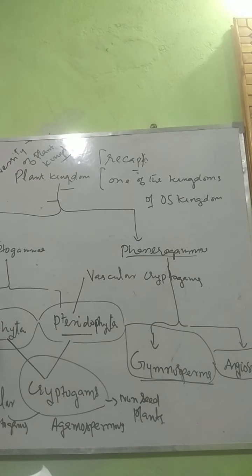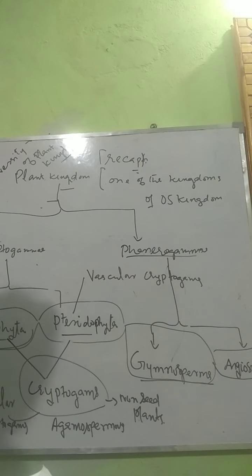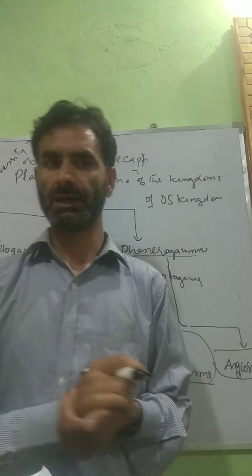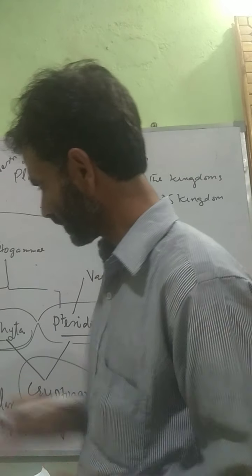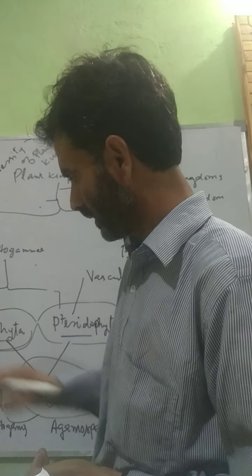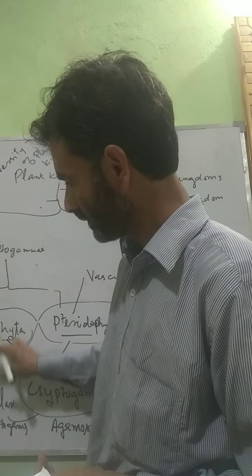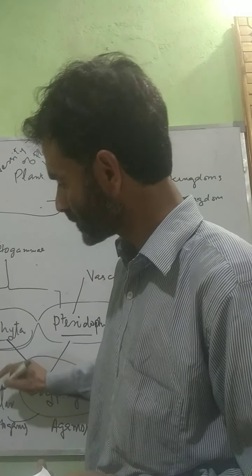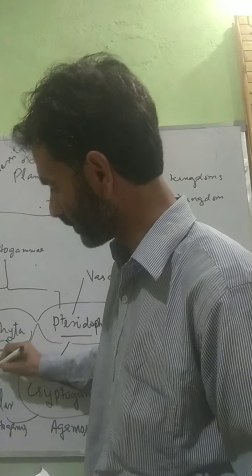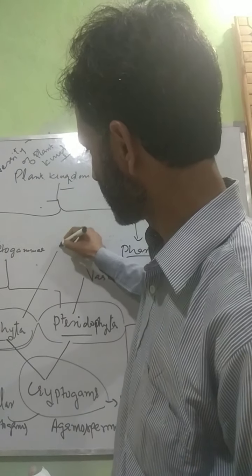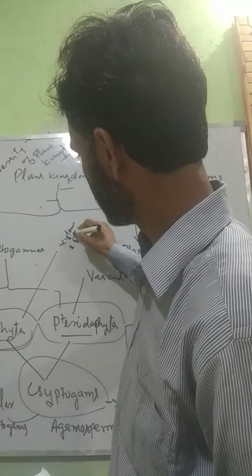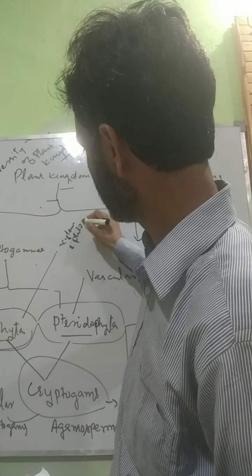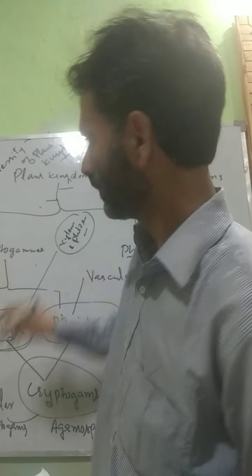Bryophytes are a group of plants which are autotrophic — that is, they do photosynthesis — but in them, vascular tissue is not developed. Vascular tissue means xylem and phloem.